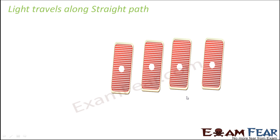What you need to do is make holes at the center of each of these cards. As you can see, there are holes at the center of each card. Now arrange these cards in such a way that the holes of all four cards are along a straight line — as you can see here, all the holes are along the same straight line.